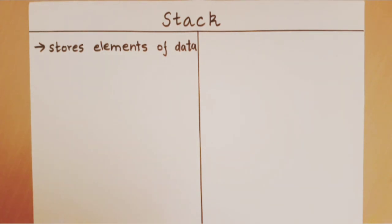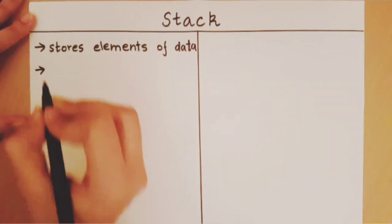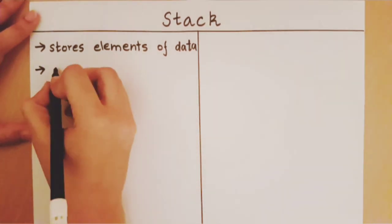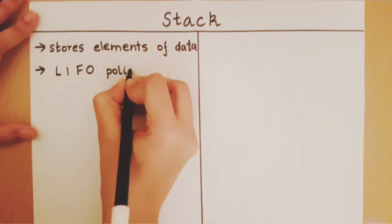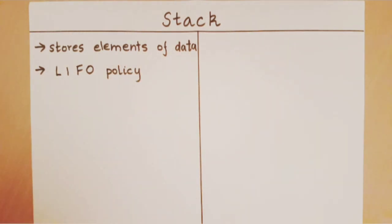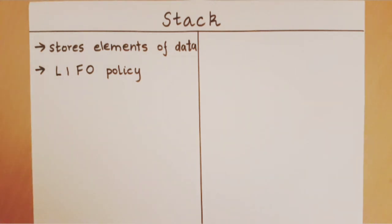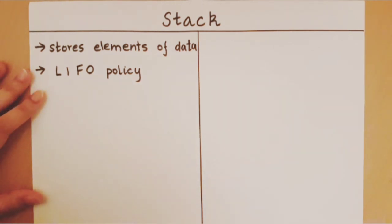The way in which a stack stores data is it follows the last in first out policy. The last element that enters the stack is the first element which is removed from the stack. To understand how a stack behaves, let's look at an example.